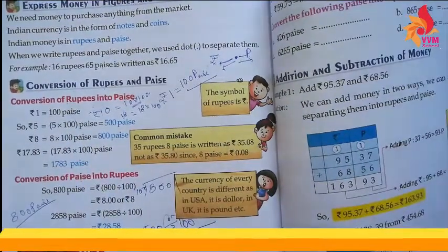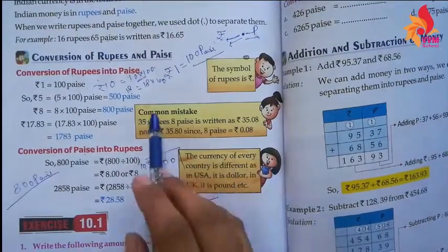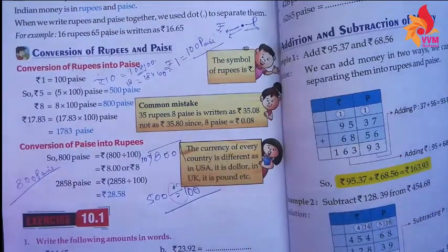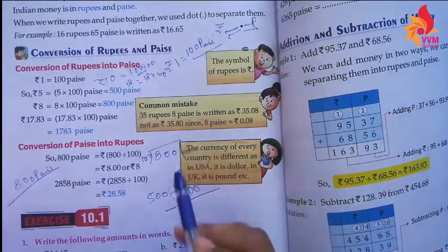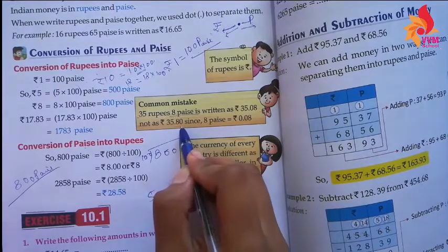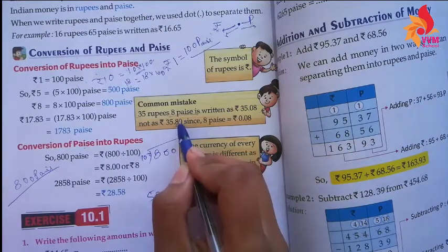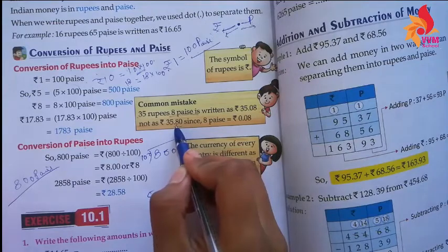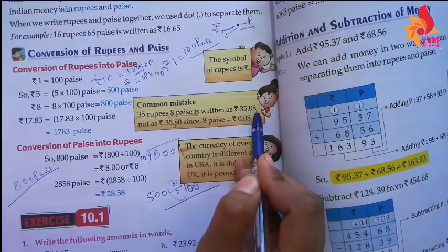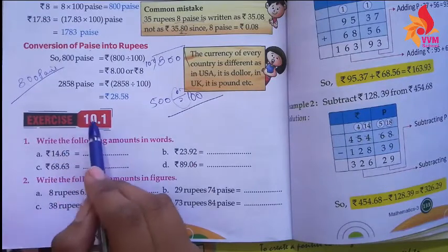Now some common mistakes to note: when we write Paise on the right side of the point, we should never start from the tens place. For example, if we write 8 Paise, it should be written as 0.08 — meaning we always use two digits on the right side of the point.